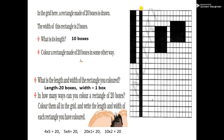So we can make: 10×2=20, 20×1=20, 5×4=20, and 4×5=20. In all these rectangles, we are taking a total of 20 boxes each time.